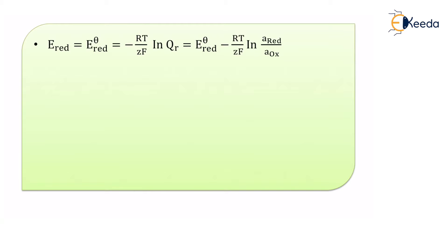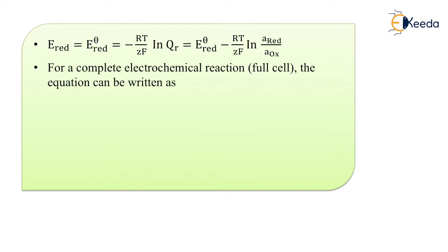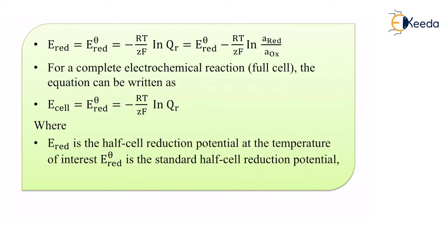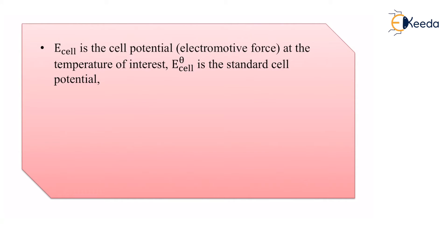The equation becomes: E-reduction equals E°-reduction minus RT/ZF times ln(A-reduction over A-oxidation). For a complete electrochemical reaction — a full cell — the equation is written as: E-cell equals E°-cell minus RT/ZF times ln(QR), where E-reduction is the half cell reduction potential at the temperature of interest and E°-cell is the standard cell potential.